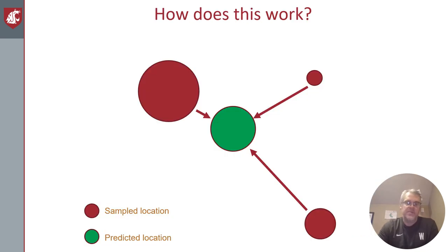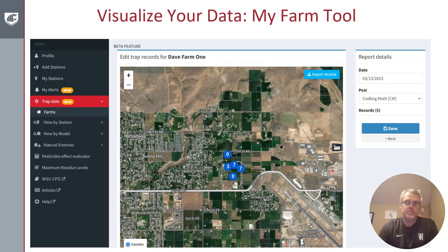The way this mapping works is: if you collect data at different locations, we can make a prediction of density at other locations based on the idea of interpolation. This is because codling moth and other insects tend to be spatially correlated — locations that are close in space tend to have similar insect numbers. By using different numbers of traps and interpolating throughout a grid, we can predict at any location what the population might look like. We have a beta version of a tool where you can select your farms on the map, enter in your trap data, and visualize that potentially alongside the phenology model.